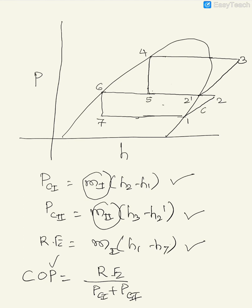This is compressor 1 on the pH diagram. There is an intercooling in the flash intercooler, and then there is a compression in compressor 2. So 1 to 2 is the first stage compression, 2 to 2-dash is the second stage compression, and 2 to 2-dash is the intercooling.